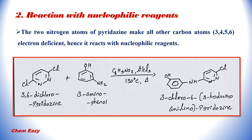The next reaction is pyridazine with nucleophilic reagents. The two nitrogen atoms of pyridazine make all other carbon atoms — at the third, fourth, fifth, and sixth positions — electron deficient. Hence pyridazine reacts with nucleophilic reagents. You can see the reaction here: 3,6-dichloropyridazine reacts with 3-aminophenol and gives 3-chloro-6-(3-hydroxyanilinopyridazine).